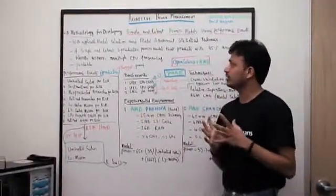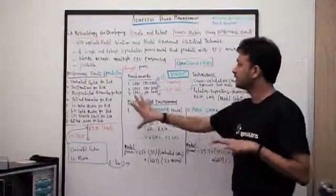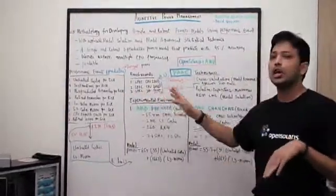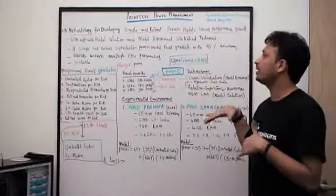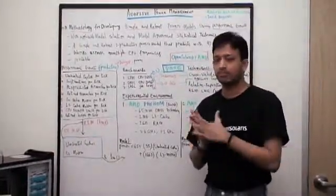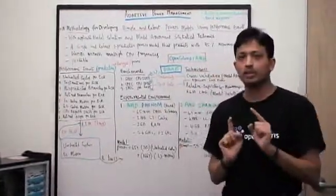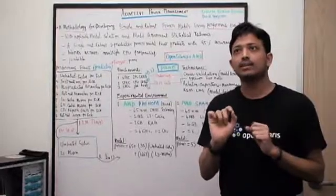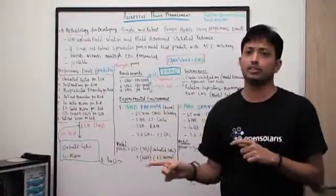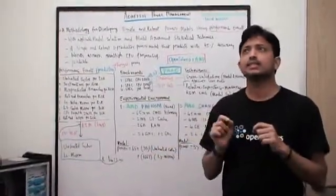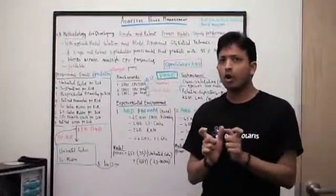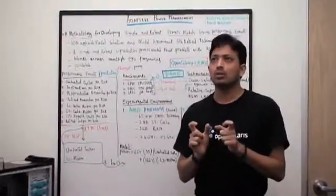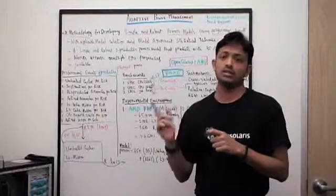So we derived rates from these events by dividing the total number of events by execution time of the workload in terms of ticks. Here, one important point is the clock tick is independent of frequency in AMD systems. That means the duration of the clock tick equals the CPU cycle when the system is running at highest frequency level.